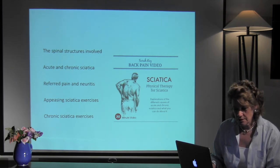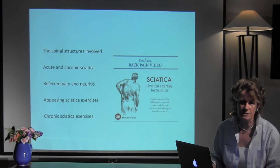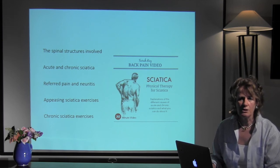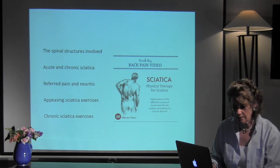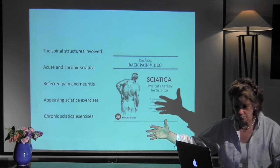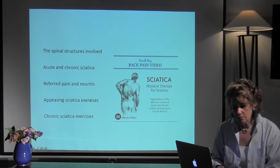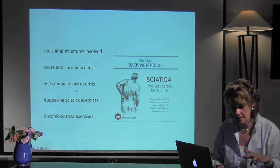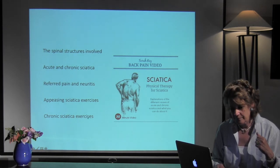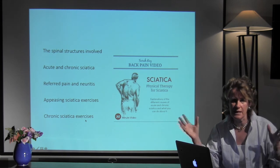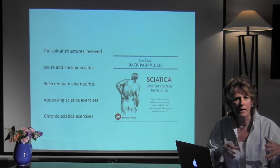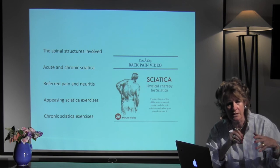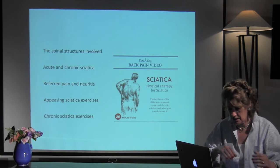Sciatica is also very important. The video covers spinal structure and the difference between acute and chronic sciatica. Chronic sciatica — pain down the back of the leg, worse after a car trip — is very common. Acute sciatica is very different: raging, lancinating leg pain, often with numbness. Those two conditions are at opposite ends of the spectrum. The video covers how to appease the spine, the difference between referred pain and neuritis — actual inflammation of the nerve itself — and separate exercises for appeasing sciatica versus chronic sciatica, which involves a lot of stretching to pull the nerve free where it's adherent and stuck in the spine.